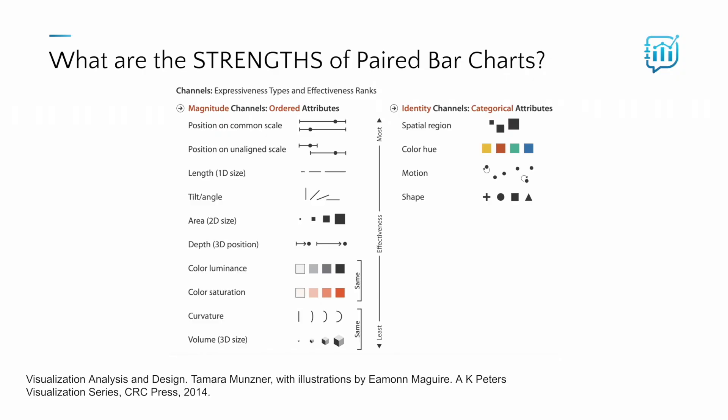So what are the strengths of the paired bar chart? As Tamara Munzner and Eamon McGuire elegantly shared in the book Visualization Analysis and Design, paired bar charts make use of the most effective encoding type: position on a common scale. We can very accurately judge the proportions by comparing the position of the ends of the bars, since they're all aligned to the exact same baseline. So far so good, right?